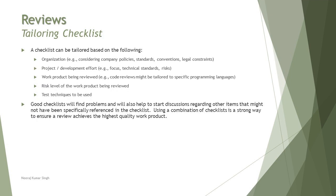Finally, let's talk about tailoring checklists — how your checklist can be tailored if you're creating one for your organization or if you are the first person to initiate its preparation. Factors to consider include: understanding the organization's standards, policies, and conventions, which help determine the format; the project and development effort — what kind of inputs are required, such as technical standards and risk; the work product being reviewed, which helps determine the risk level (generally high or low); and the test technique to be used, if any.